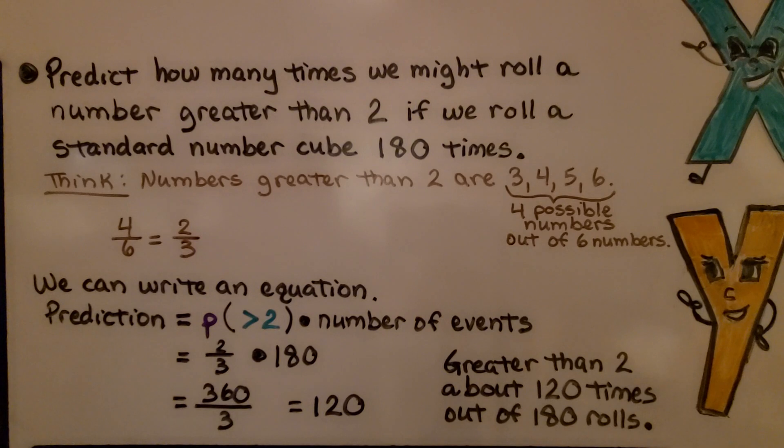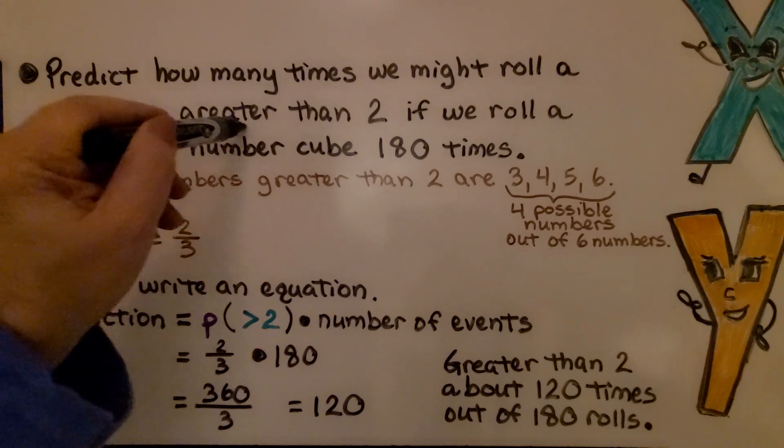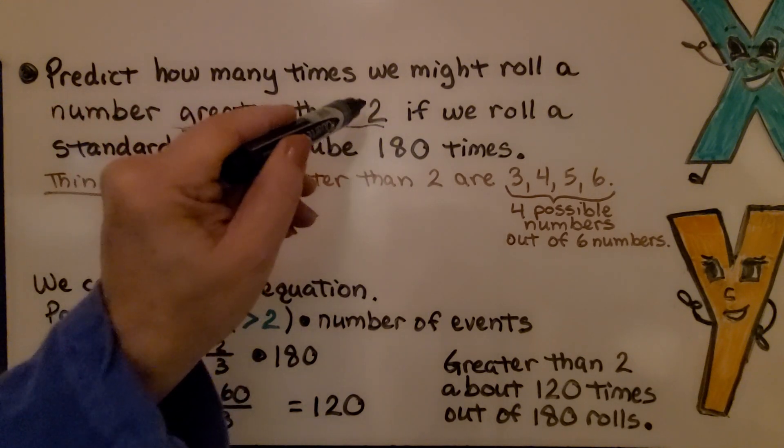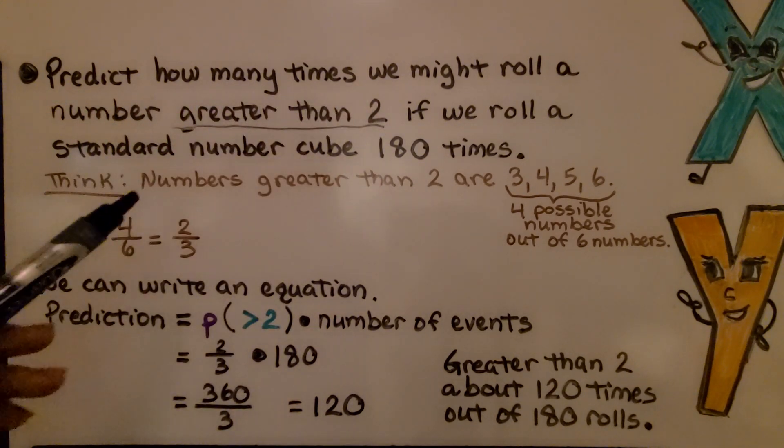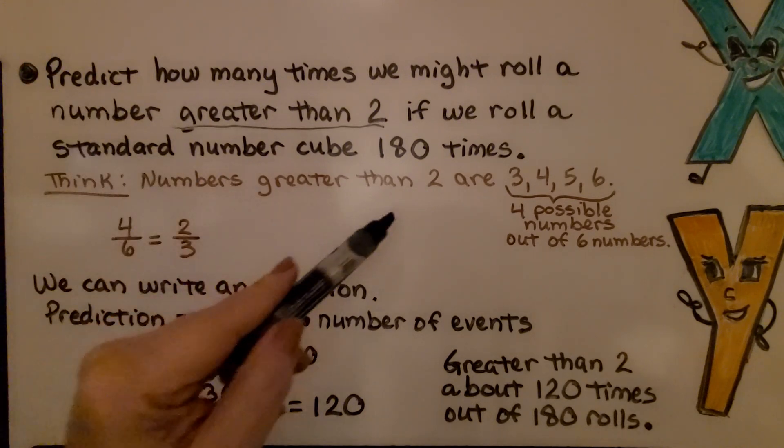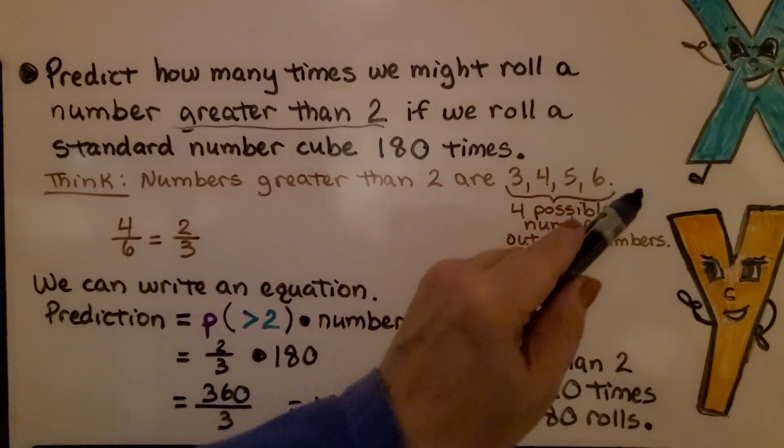Now, here it's telling us to predict how many times we might roll a number greater than 2 if we roll a standard number cube 180 times. Now, be careful. It says greater than 2, so it doesn't include 2. We think numbers greater than 2 on a number cube would be 3, 4, 5, 6.